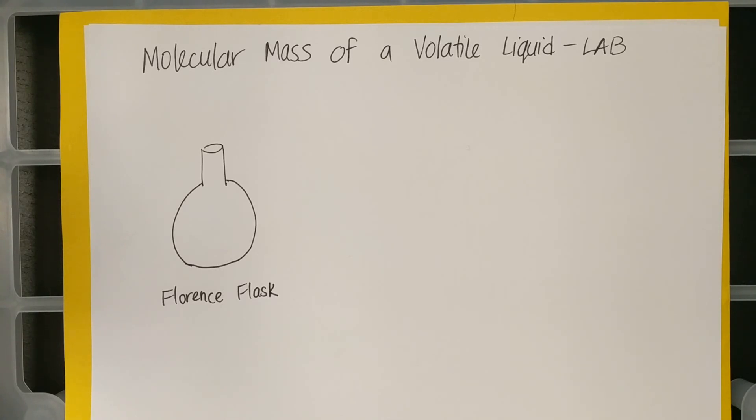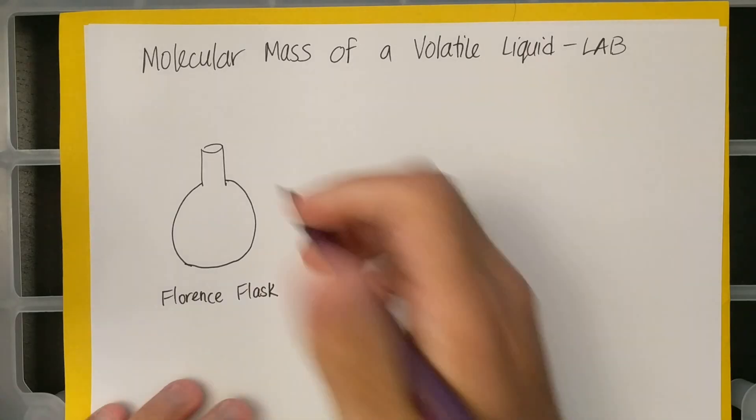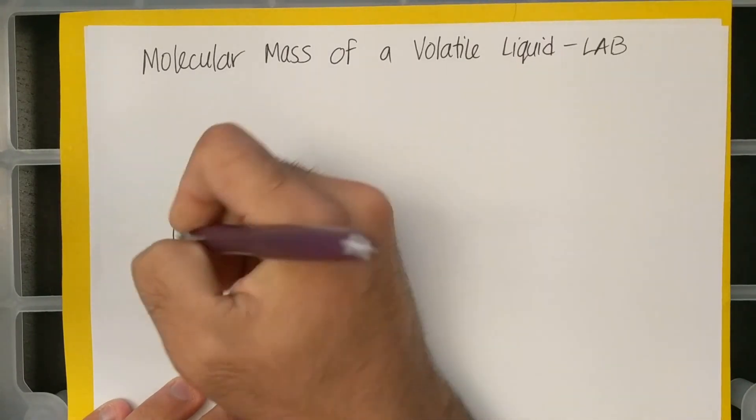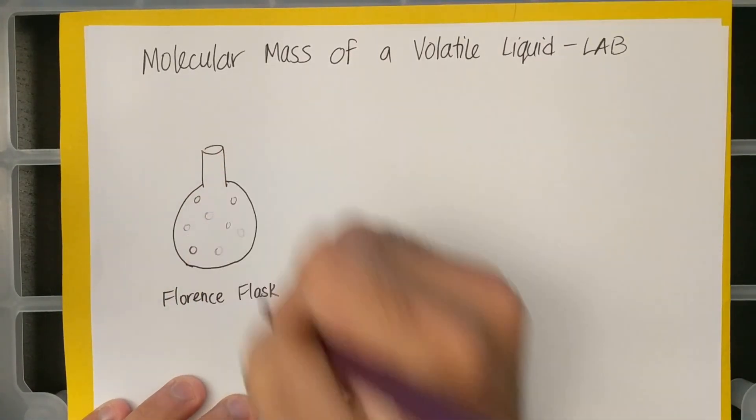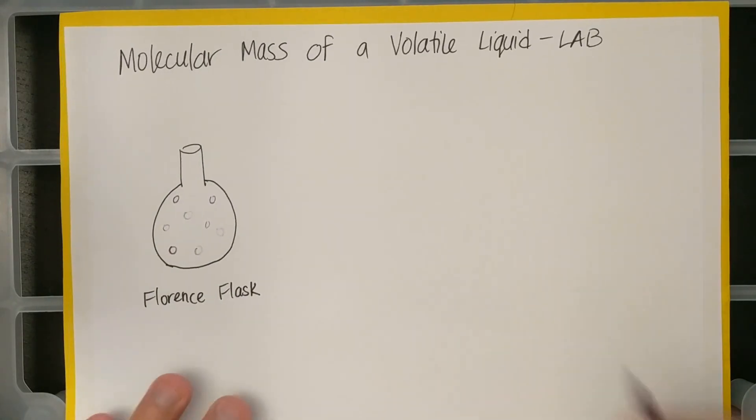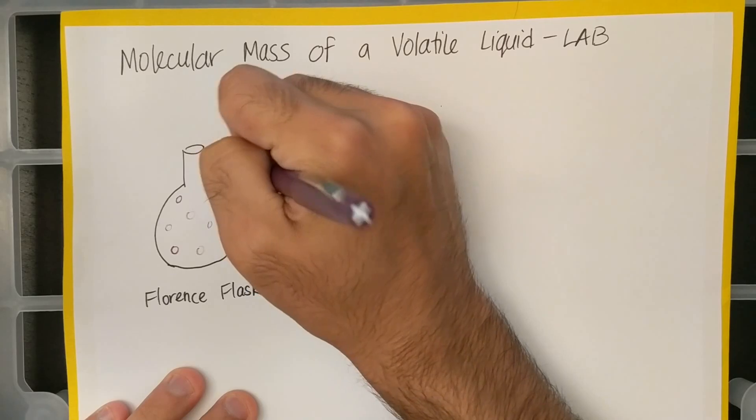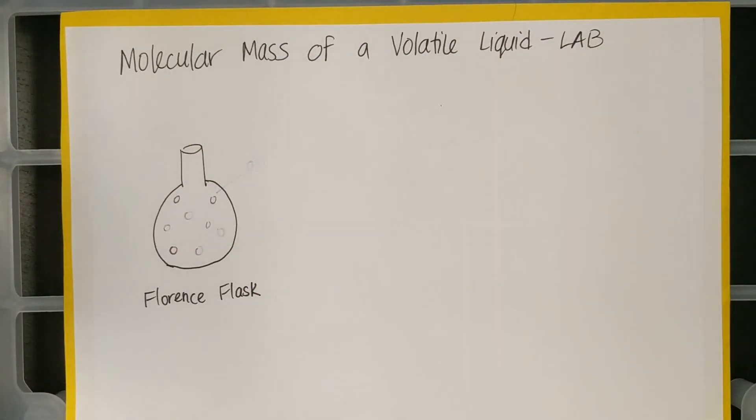But in chemistry, we have to remember that we rarely have only empty space unless we're in a vacuum. So I'm going to draw a particular diagram of what we really had in this flask to begin with. In this flask we had air, of course.